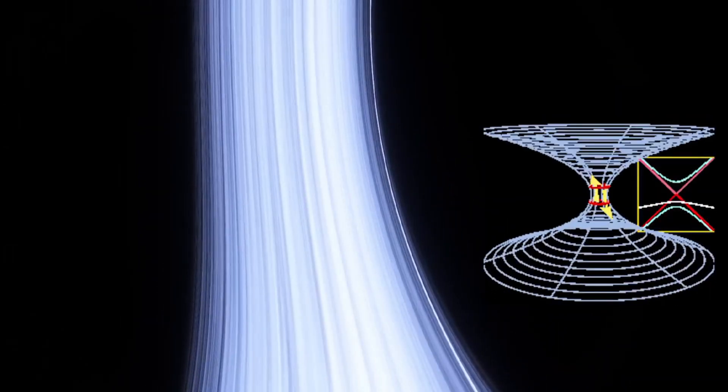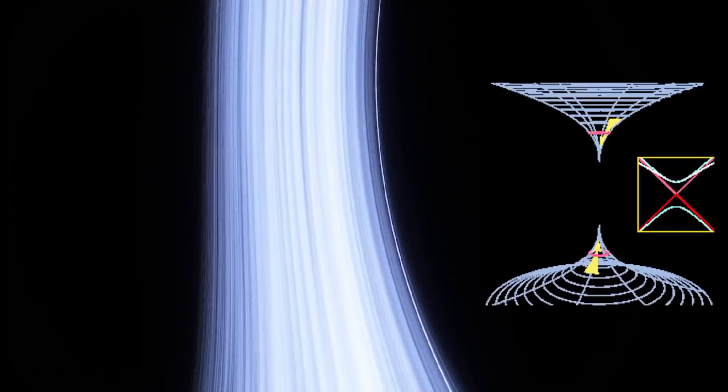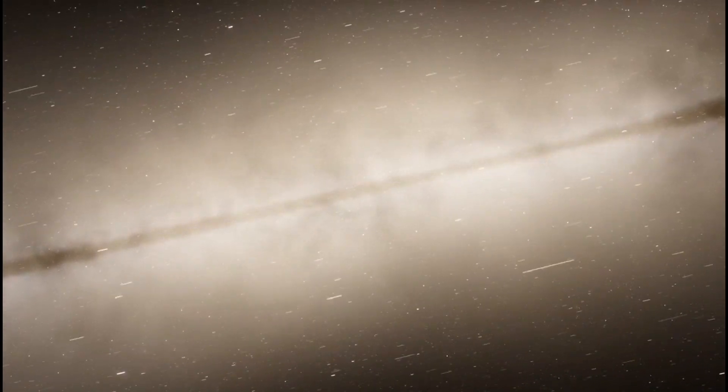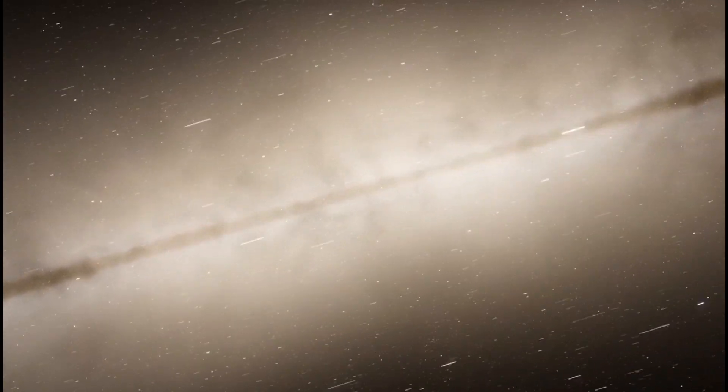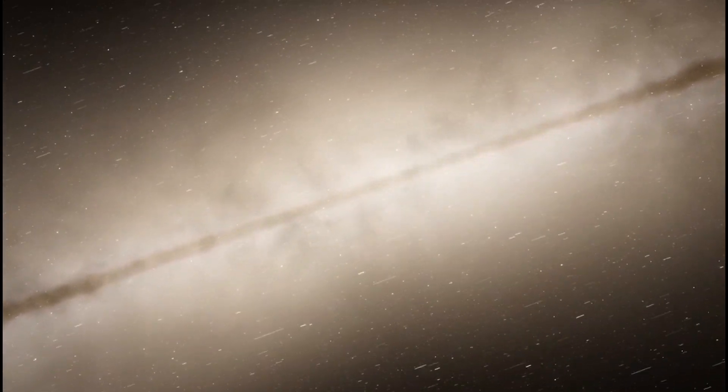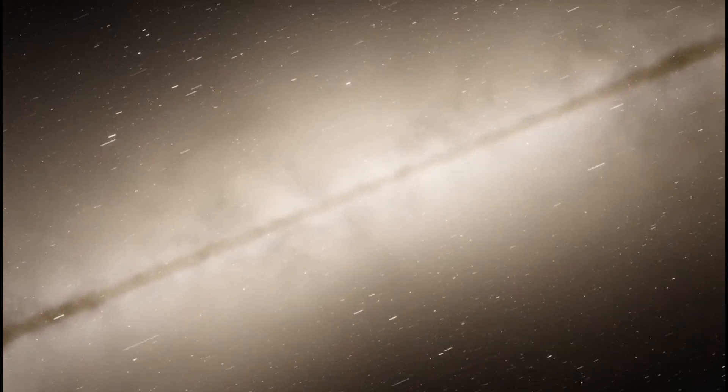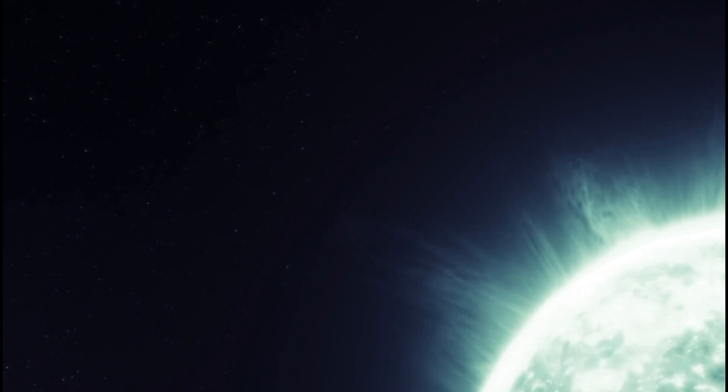So what are nova explosions? Nova explosions are fascinating astronomical events that occur in binary star systems, where a white dwarf star accumulates material from its companion star. Unlike supernovae, which involve the catastrophic destruction of a star, novae are characterized by a sudden increase in brightness caused by the explosive fusion of hydrogen on the surface of the white dwarf. This process can lead to a dramatic outburst, temporarily increasing the star's luminosity by thousands of times, but the white dwarf itself remains intact.